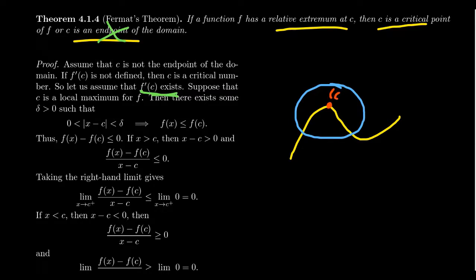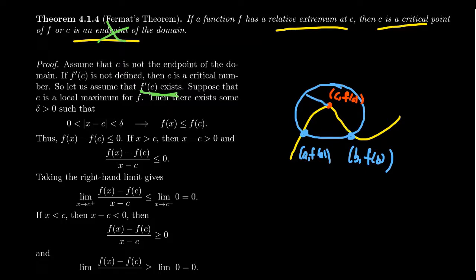We have our maximum value at (c, f(c)), with points (a, f(a)) and (b, f(b)) nearby. In terms of the x-coordinate, we consider a delta neighborhood — a circle of radius delta — so if the distance from x to c is less than delta, then because it's a local maximum, the y-coordinate satisfies f(x) ≤ f(c) for all x inside this neighborhood.